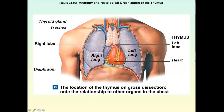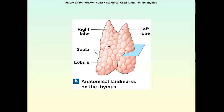It's underneath your sternum, which puts the heart and the thymus together. You can see the position — it's superior to the heart. It has two larger lobes: a right and left lobe, and the thymus looks sort of bumpy. Each small section is called a lobule.